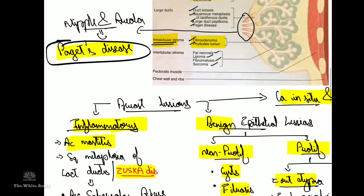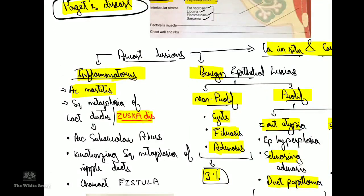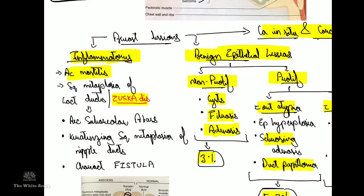The various breast lesions can be classified into inflammatory lesions and benign epithelial lesions. The first inflammatory lesion is acute mastitis — infection of the glands — which usually occurs in lactating women. As the baby sucks the nipple, multiple cracks are formed, allowing bacteria to invade. Most commonly it is Staphylococcus aureus, and patients present with an erythematous and painful lesion along with fever.